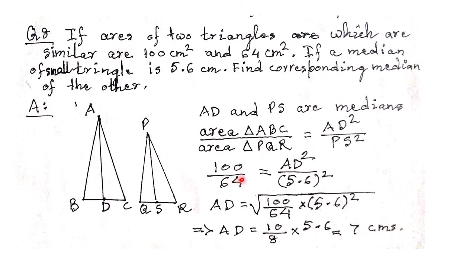PS is given as 5.6 cm. We need to find AD. So AD = √(100/64 × 5.6²). Square root of 100 is 10, square root of 64 is 8, square root of 5.6² is 5.6. Solving: 5.6/8 = 0.7, then 0.7 × 10 = 7 cm. The answer is 7 cm.